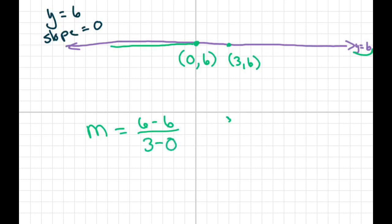So you get 0 over 3. Now that does equal 0, because 0 times 3 equals 0.